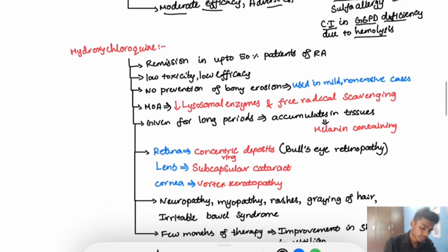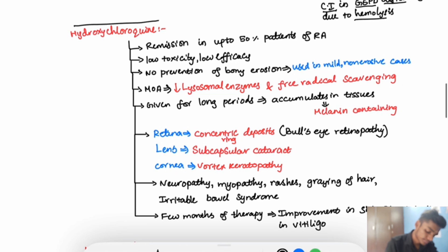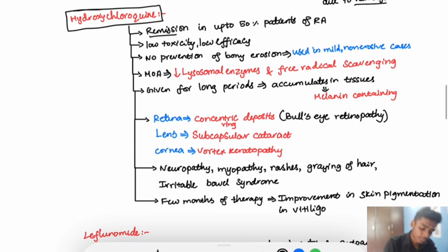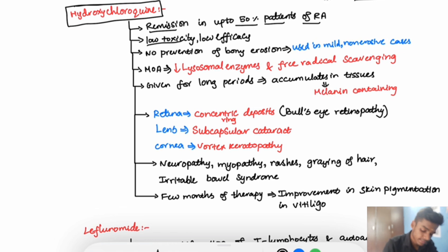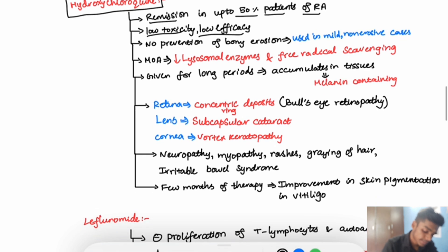Hydroxychloroquine produces remission in up to 50% of patients with rheumatoid arthritis, but it cannot be used regularly. It has low toxicity and low efficacy, and there is no prevention of bony erosion. So it is used in mild, non-erosive cases.